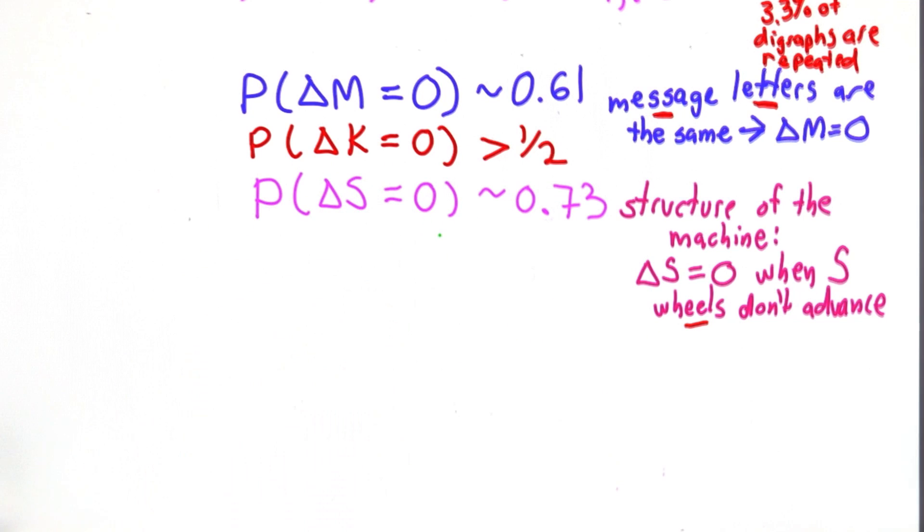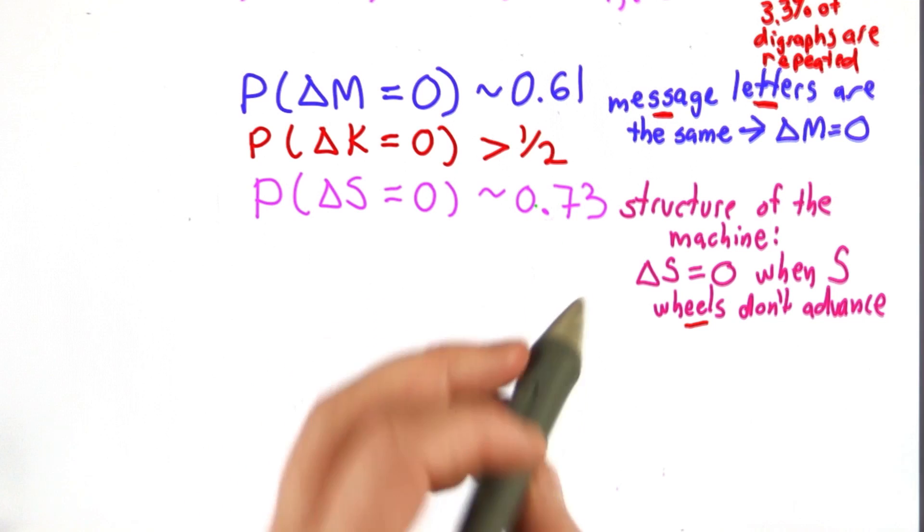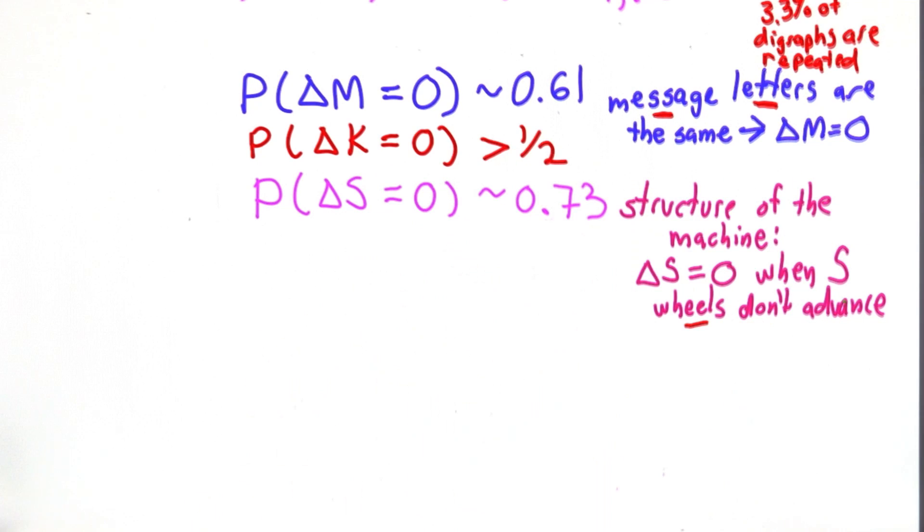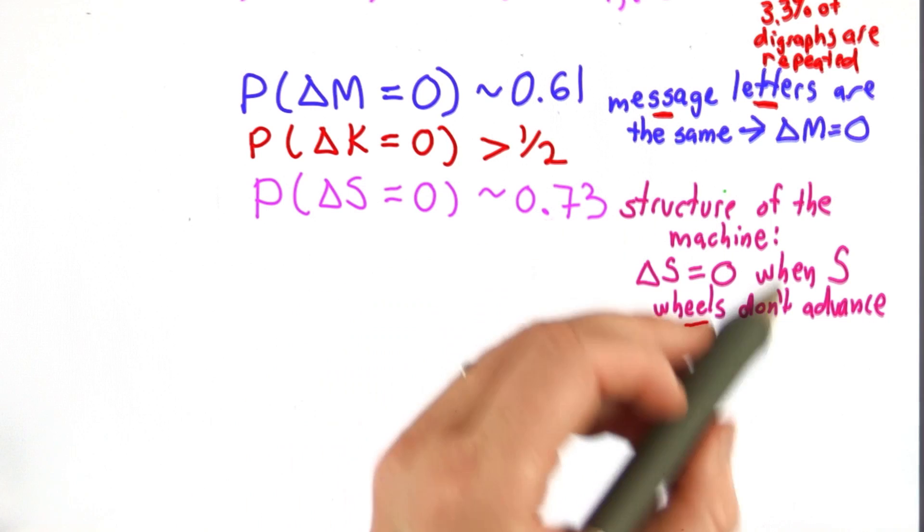And we knew that the probability of delta S being 0 was about 0.73, and that's because of the structure of the machine. The S wheels don't advance every step.